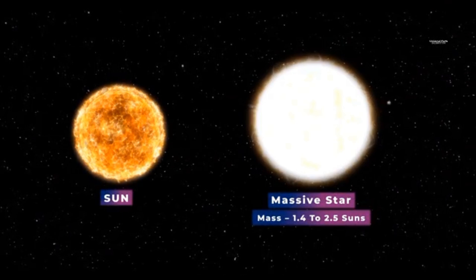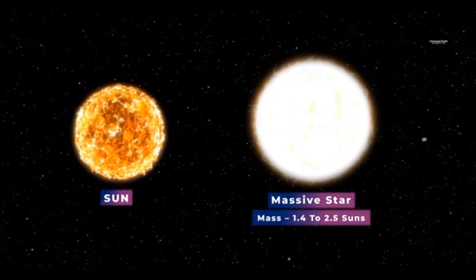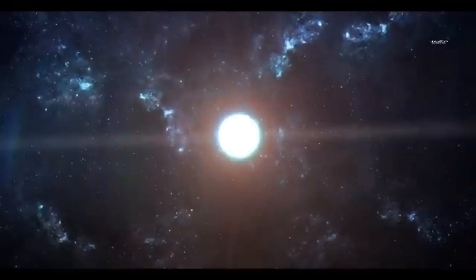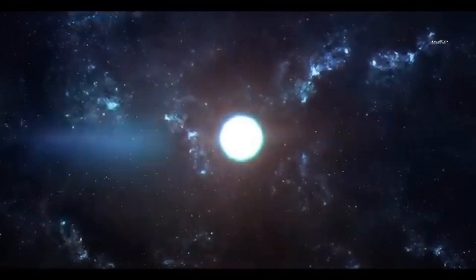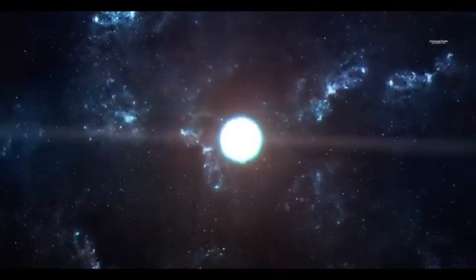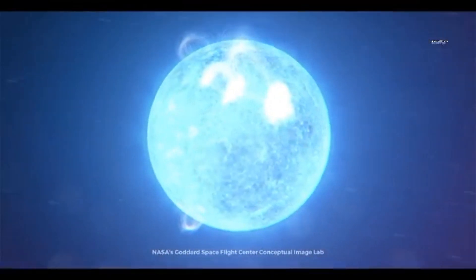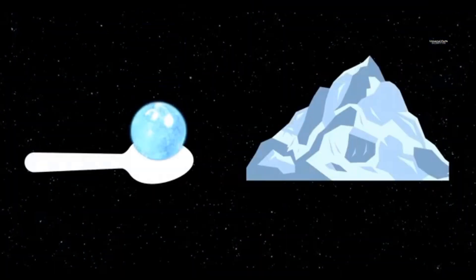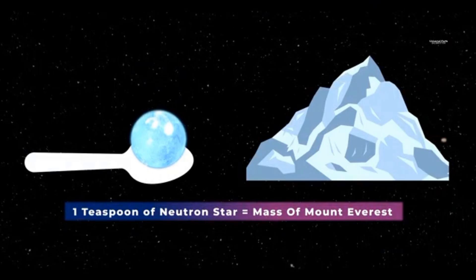Stars with a mass 1.4 to 2.5 times greater than the Sun often end up as neutron stars. These are among the most mysterious and dangerous stars in the universe. Their density is so extreme that a spoonful of their matter could weigh as much as Mount Everest.